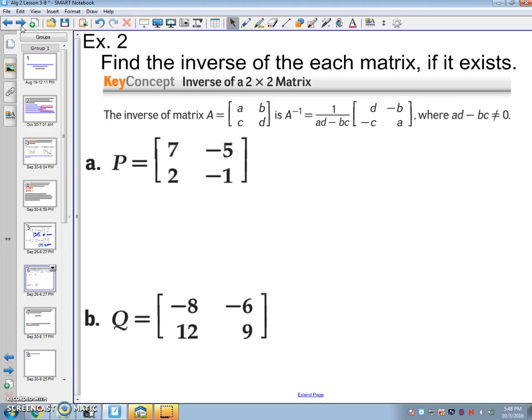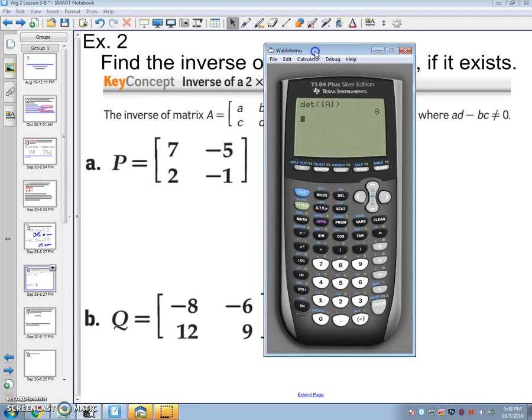Example 2. Find the inverse of each matrix, if it exists. Well, there is a formula. That fancy formula right there is 1 over AD minus BC, so 1 over the determinant, and then you switch the positions of A and D, you need to change the signs of B and C. But, again, the calculator can do it all for us. So I'm going to show you that.